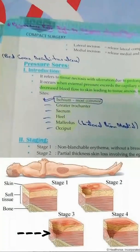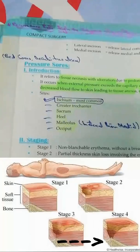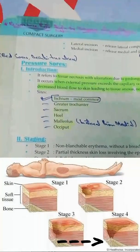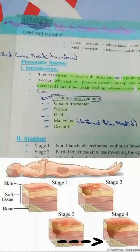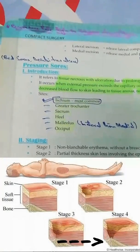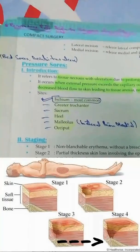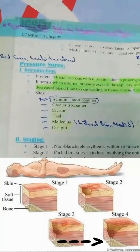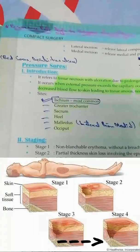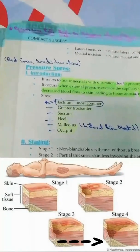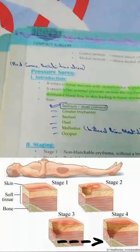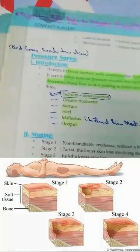Stage 4 is full thickness skin loss along with the fascia below the skin — the fascia is also involved, making it stage 4.